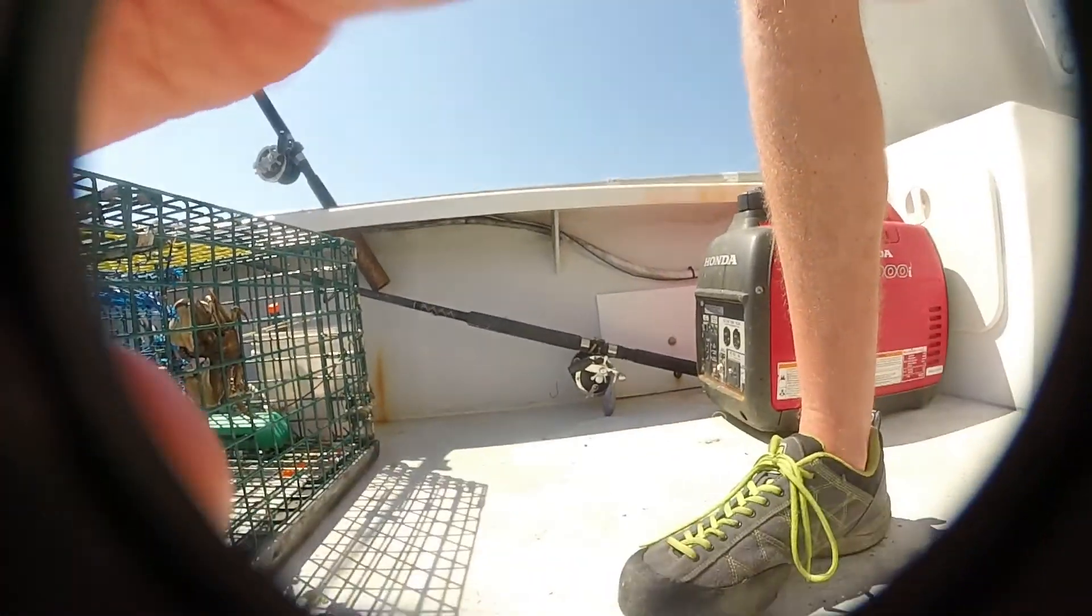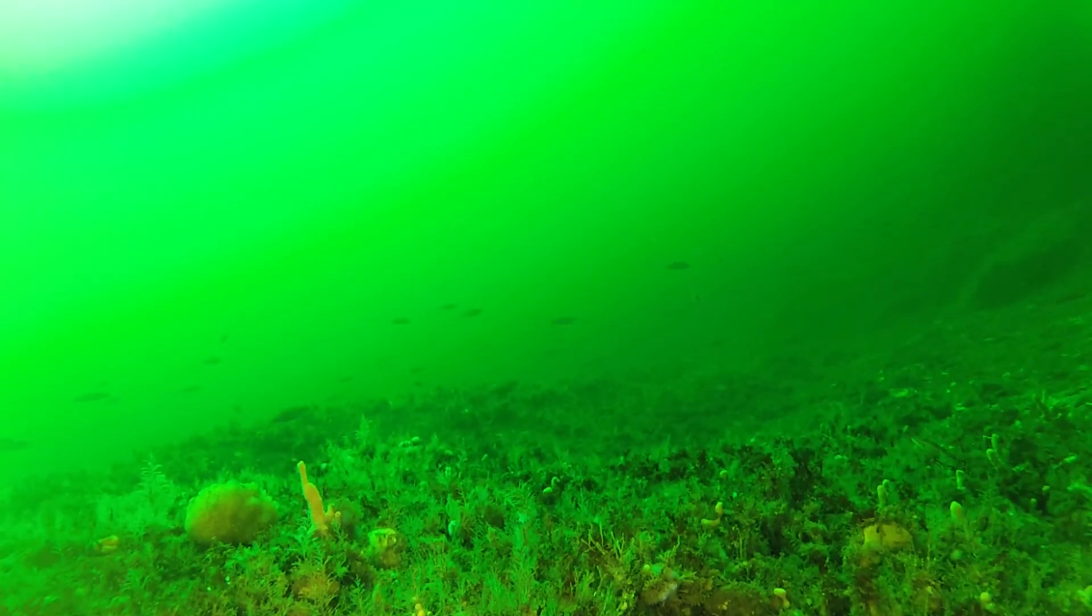Unlike some fish finders, our data doesn't show a little fish symbol when there's a fish below the boat. It just bounces back sound and it's our job to interpret that sound to figure out what species of fish are below us. To do that we use a process called ground truthing. Ground truthing is a process of using nets and cameras to match the species of fish below the boat with the acoustic signal we see in the data.